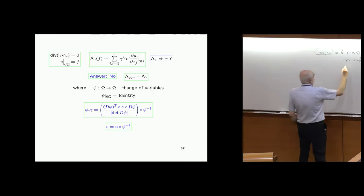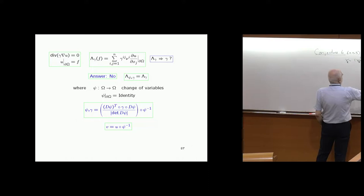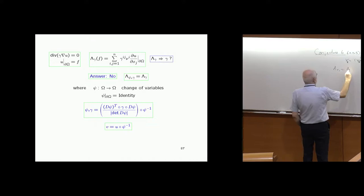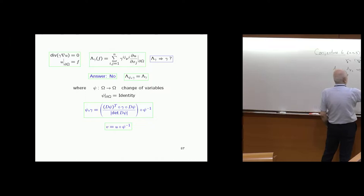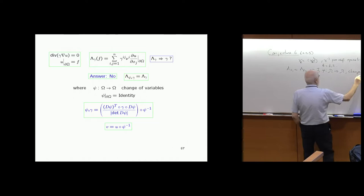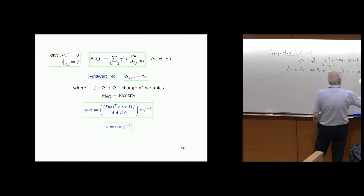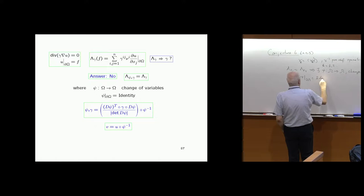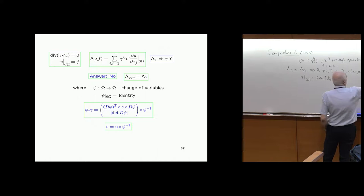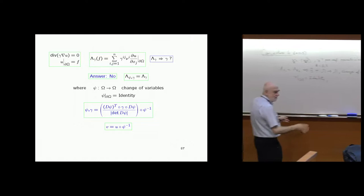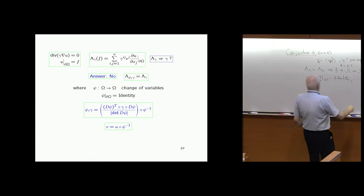We know very little about this in dimension three or higher. You can get a paper in the Annals. New ideas are certainly needed for this in dimension three. In dimension two, this is known — even for L-infinity conductivity — because there are special coordinates called isothermal coordinates that reduce the problem to the isotropic case.